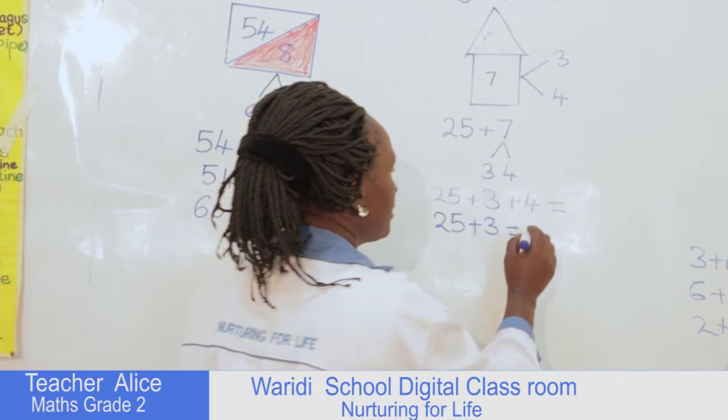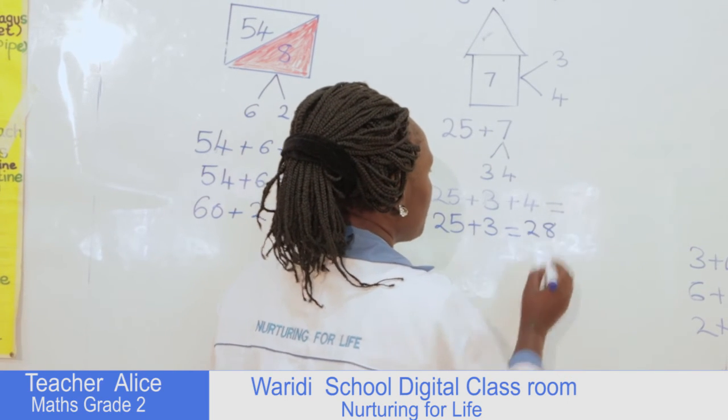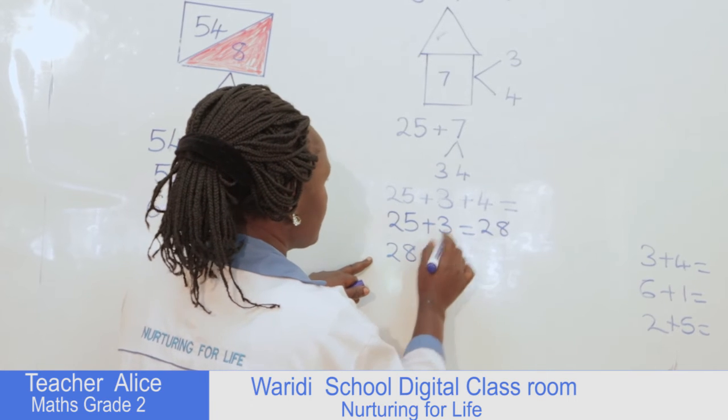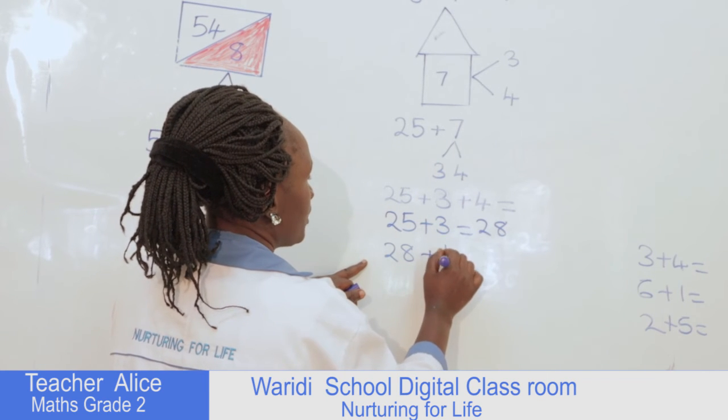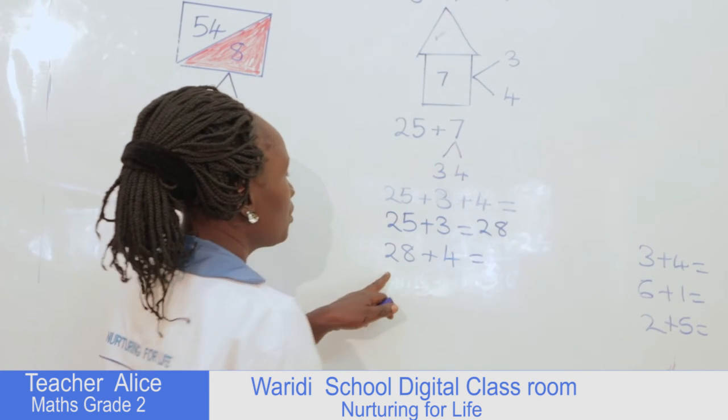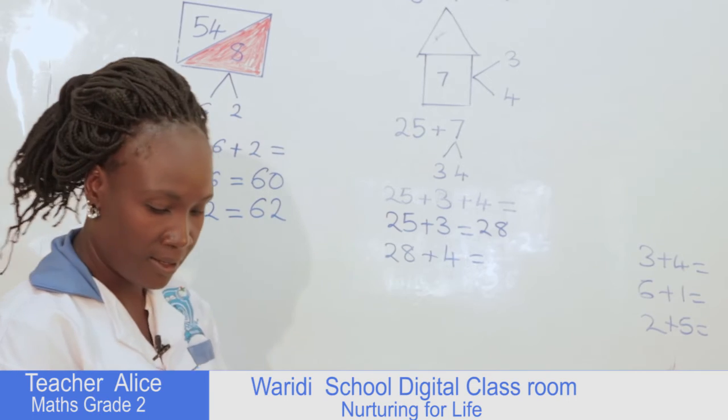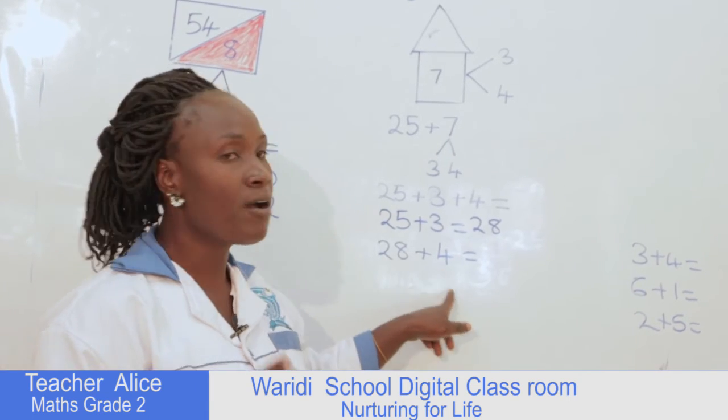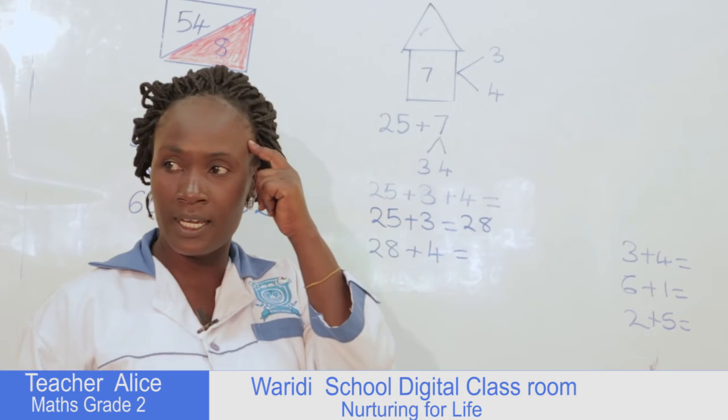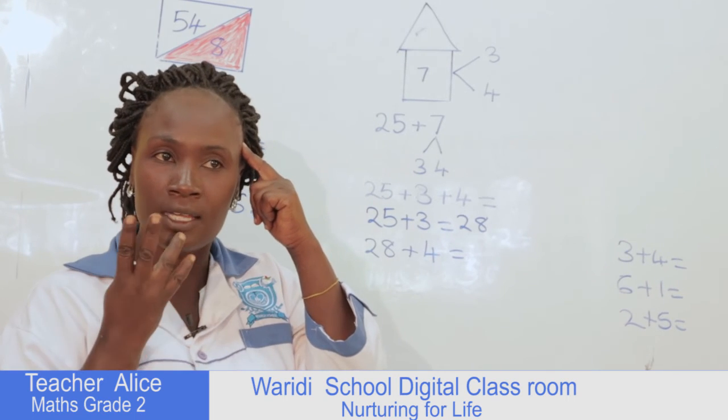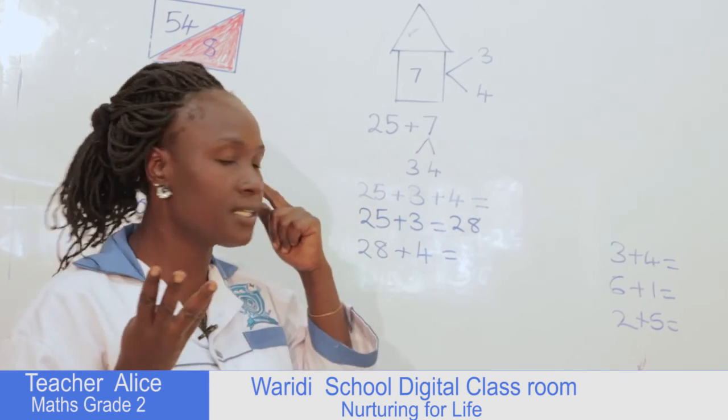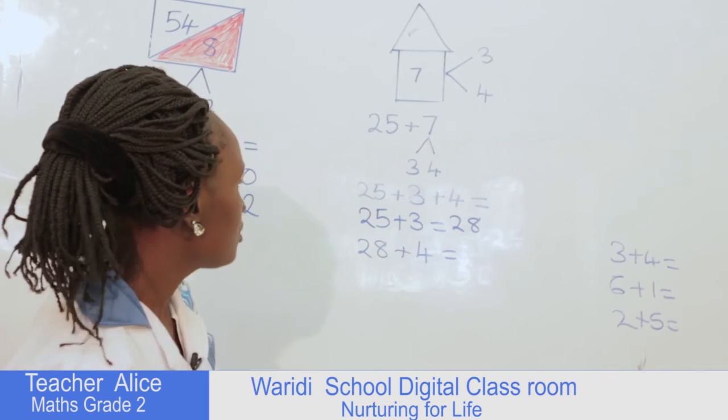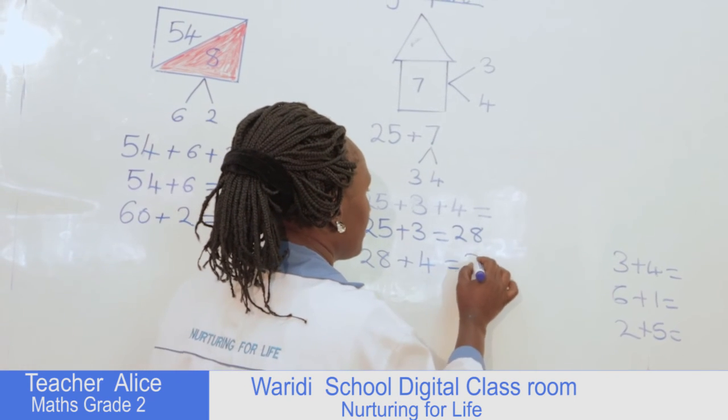Then we take the 28, we write it down here. 28 plus this 4. 28 plus 4 equals, make sure you'll be showing your fingers. 28 in my head, four fingers: 28, 29, 30, 31, 32. So the answer is 32.